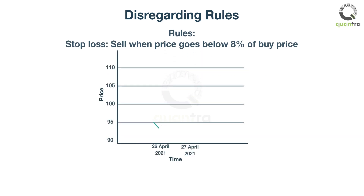But when you are putting real money in the trade, emotions can take over fast. You open a position and the position is at a loss of 5%. You are worried and you think it will go down by another 5%, and exit from the position immediately. But the stock reverses and increases 10% above your buy price. Thus, if you had trusted your rules, you would have been making gains instead of losses.